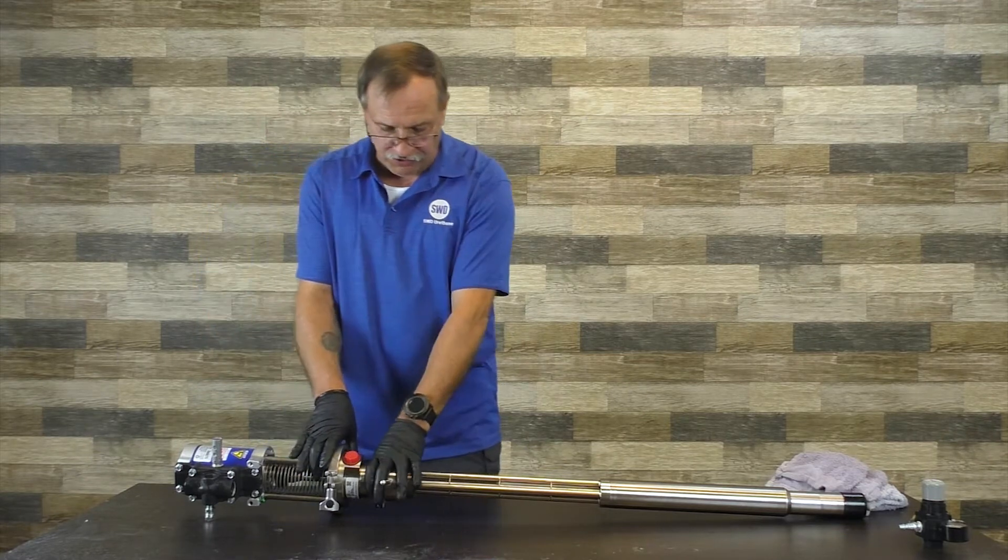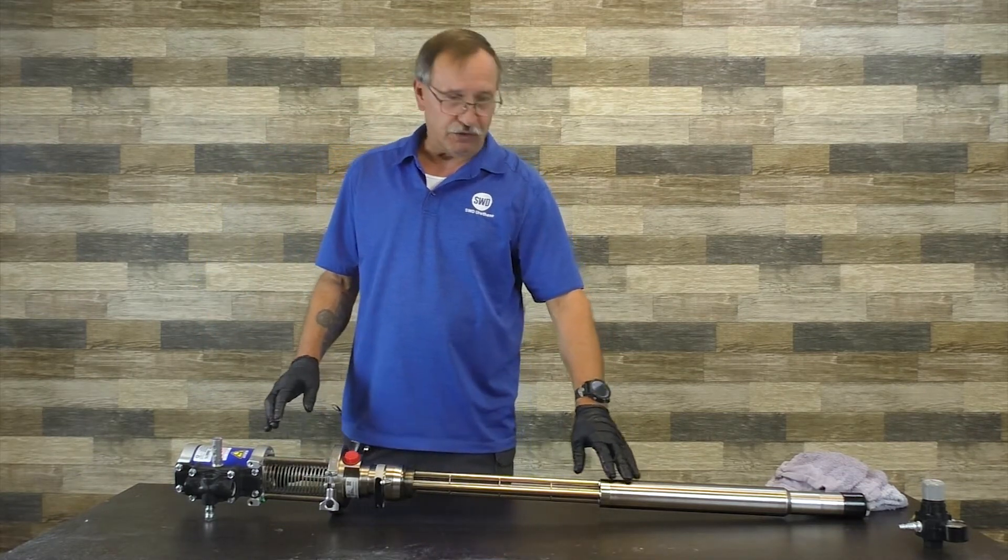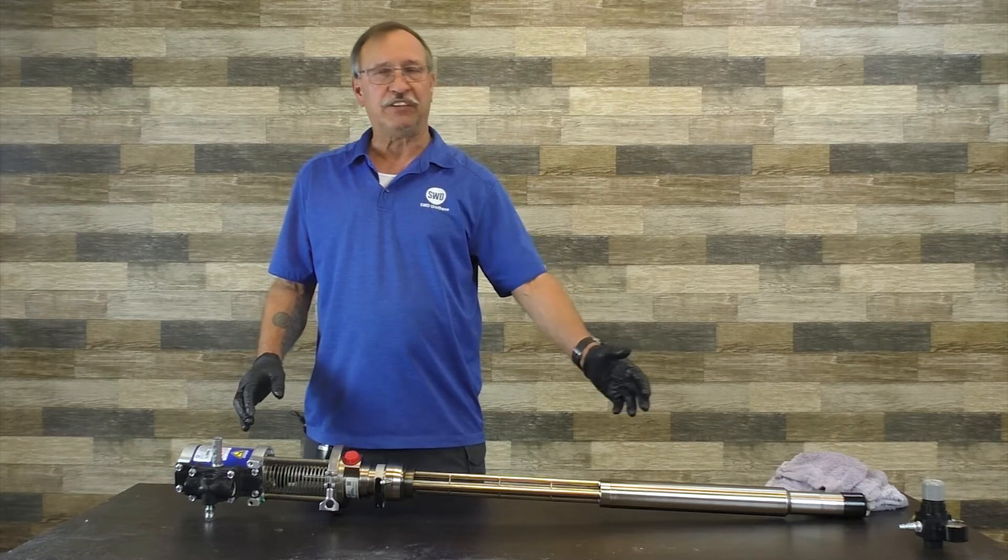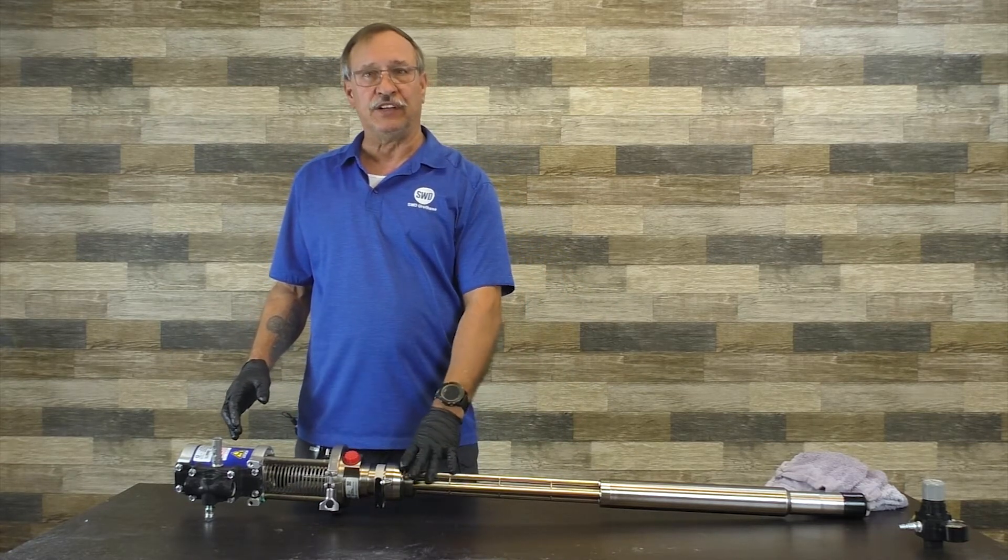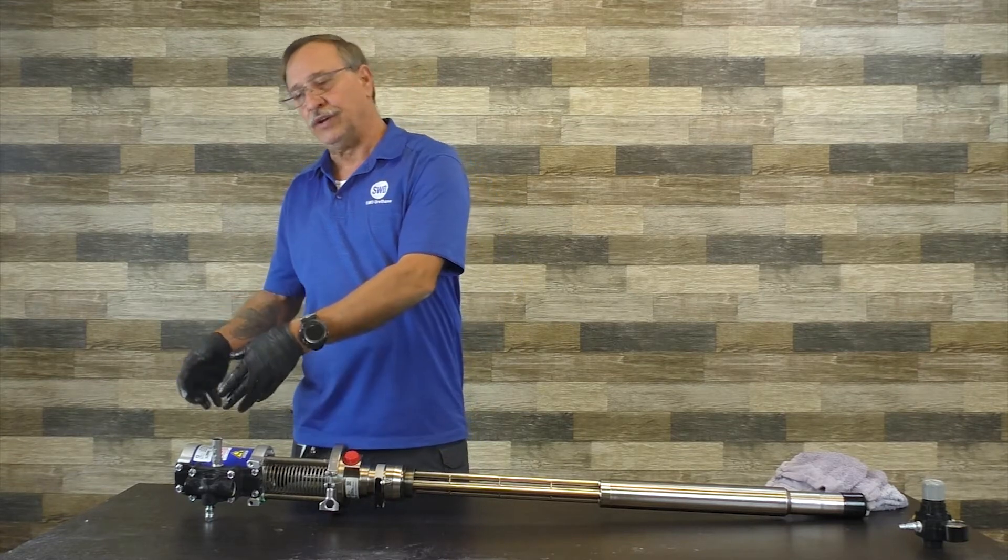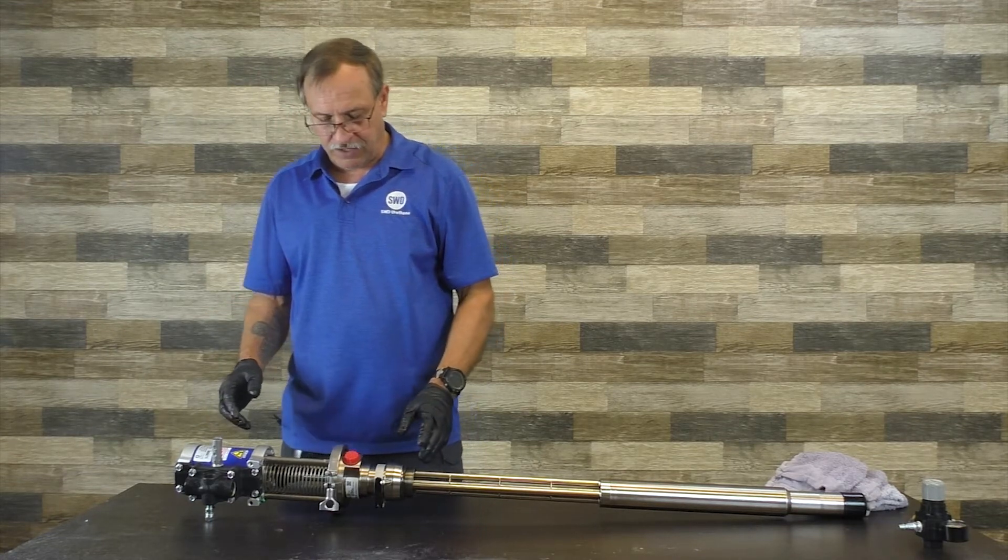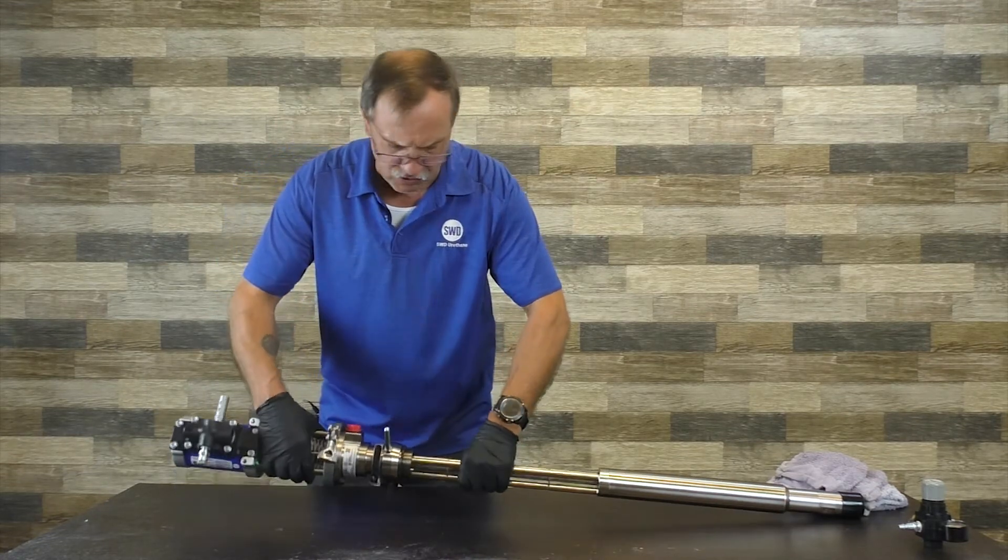You can leave the bottom fluid part in the barrel. So say if you have an open cell and closed cell job, instead of having to switch this out, you can leave this in the barrel, go to another one, and just slide the air motor part.